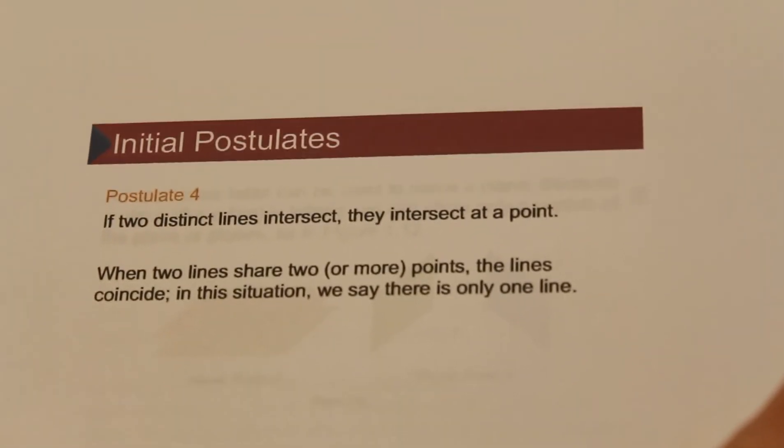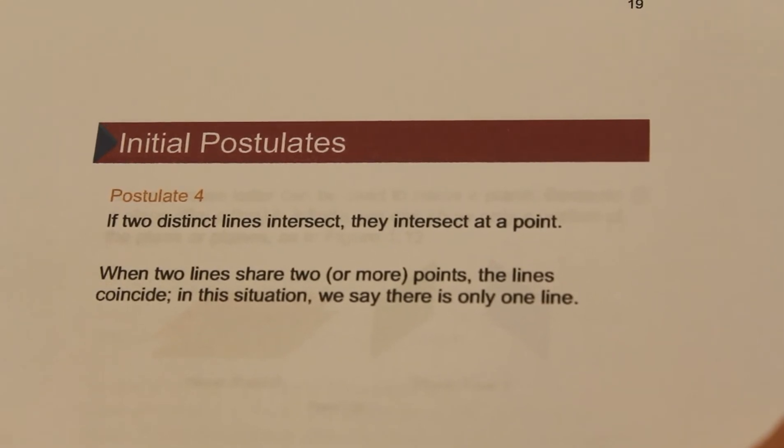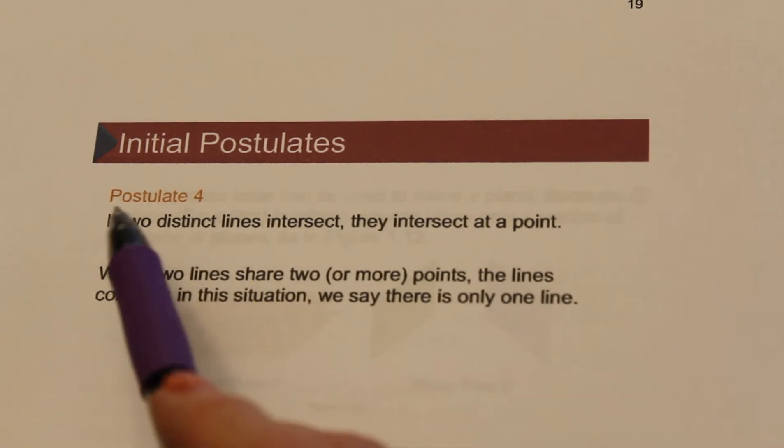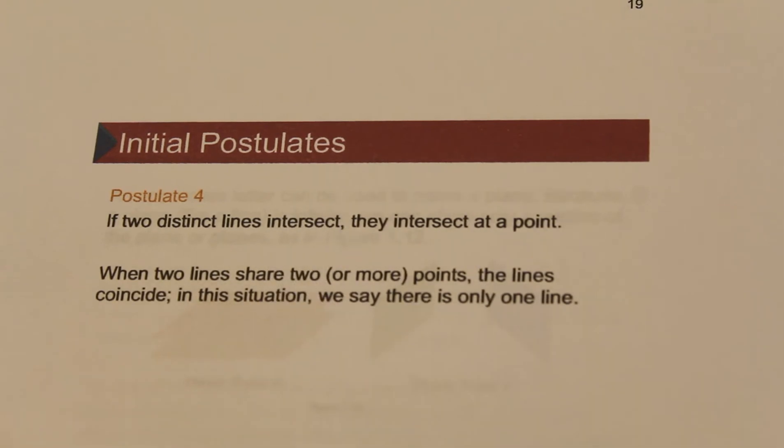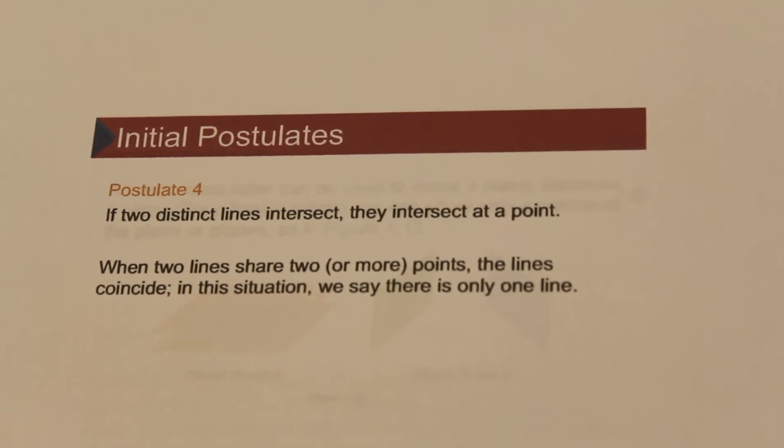And in fact, that leads us to a postulate. And remember, postulates are always assumed true, so you can use this postulate when creating your linear reasoning. If two distinct lines intersect, then they must intersect at a point. If two lines share two or more points, then they actually must be the exact same line.